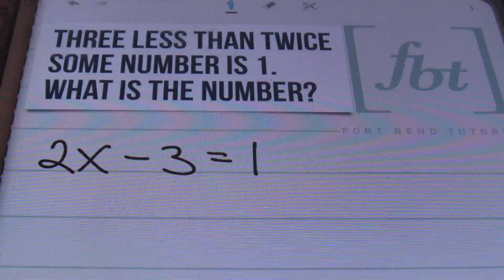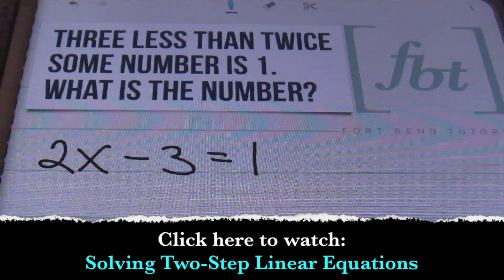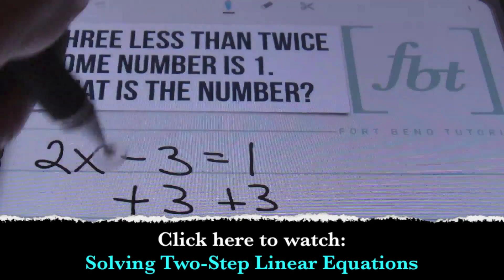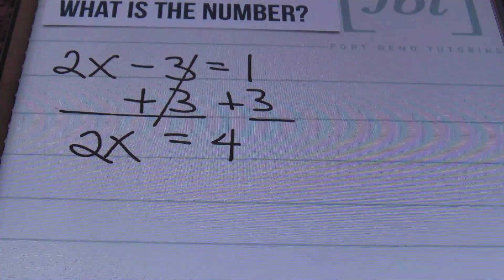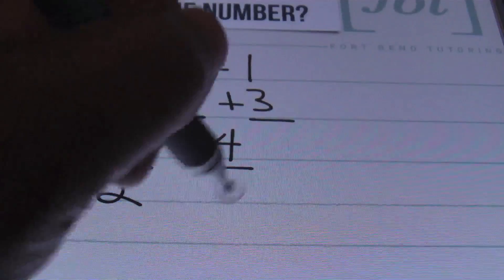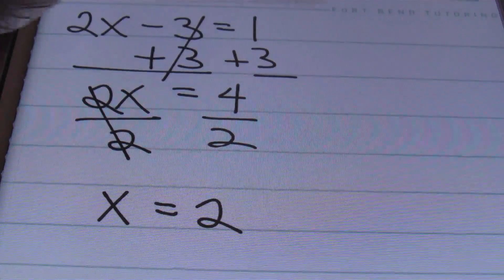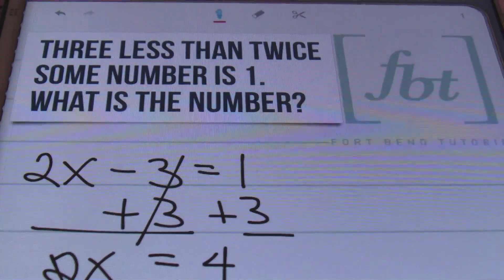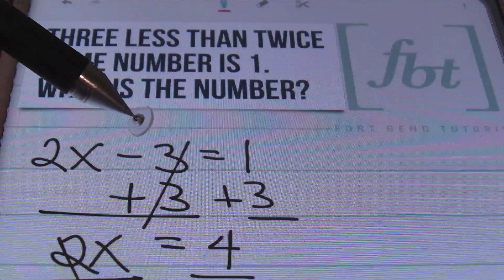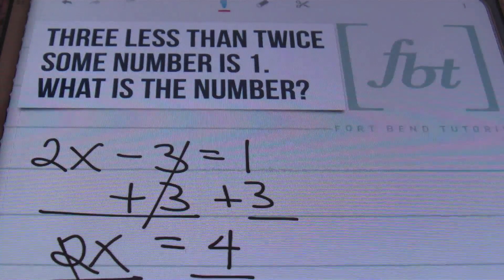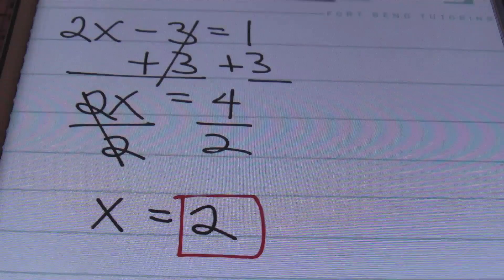Three less than twice some number is one translates exactly to the equation you see: 2x minus 3 equals 1. Since they ask what the number is, we solve for it. I start by isolating the term with the variable by adding three to both sides of the equal sign. Bringing down 2x, that equals four — that's the one plus three. Then I divide both sides by two, which cancels out to give me x equals four divided by two, which is two. That's the answer.